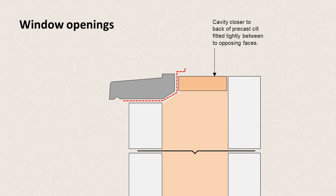Because we have a cavity we have to close it, and we would probably use a proprietary cavity closer, designed to fit tightly between the inside leaf of blockwork and the back face of the sill.